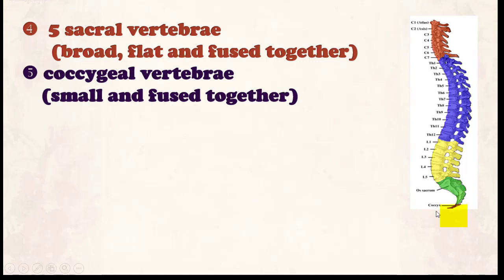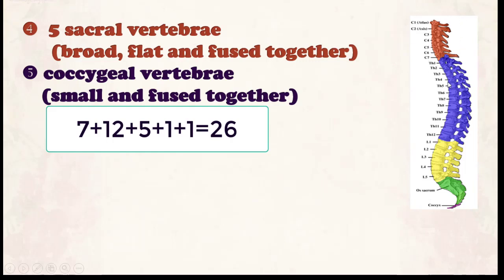Number five: the coccygeal vertebrae, which are small and fused, with a number of four. So in summary: seven cervical, twelve thoracic, five lumbar, five sacral, and four coccygeal vertebrae. Because the sacral vertebrae are considered as one and the coccygeal as one, the total number of bones in the vertebral column is 26.